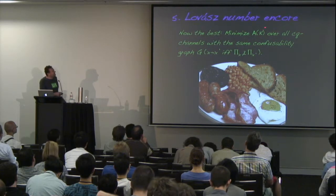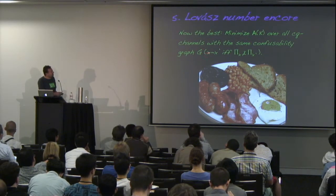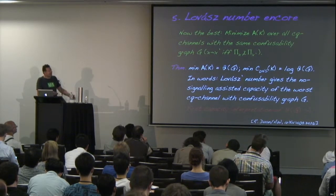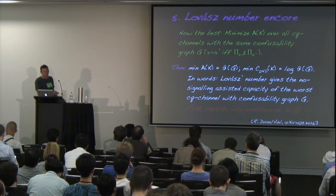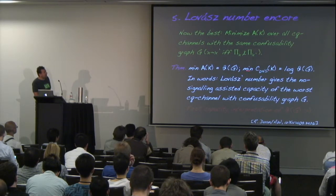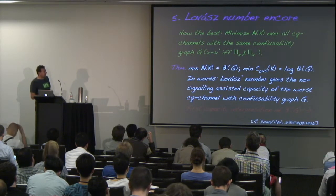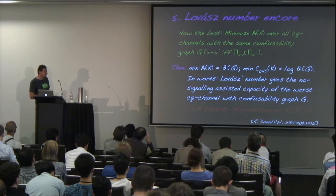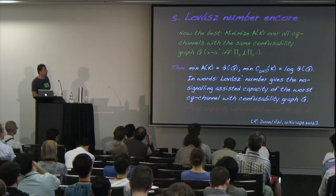Finally, we minimize A(K) over all CQ channels with the same confusability graph G. For CQ channels, two inputs are confusable if the corresponding output states are non-orthogonal. The theorem states that this minimum equals the Lovász theta number — because this minimization of A(K) turns out to be one of Lovász's many equivalent characterizations of theta from his original paper. Therefore, the log of theta gives the no-signaling-assisted zero-error capacity of the worst CQ channel among all those with a given confusability graph G. This appears to be the first information-theoretic interpretation of the Lovász theta number.